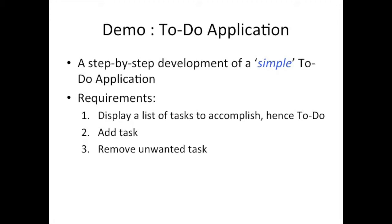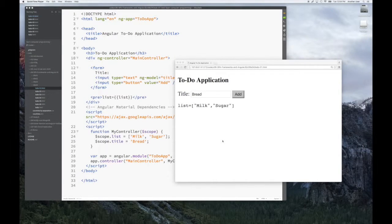Now, fair warning — it's a simple application, but it demonstrates a lot of things we can build on. Our requirements for the application are: display a list of tasks to be accomplished — a to-do list or shopping list — and not just a static list. We want to be able to add to the list and also remove things we may not want. So let's jump right in and start building our to-do application step by step.